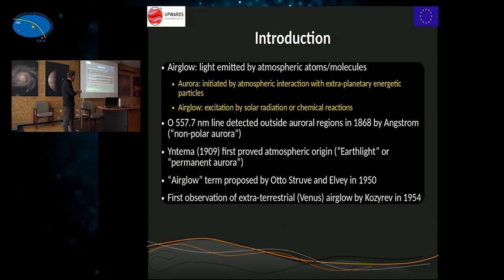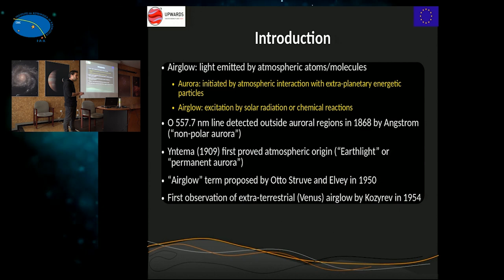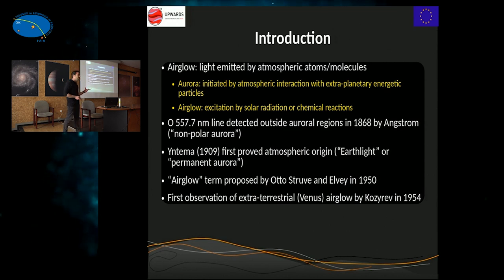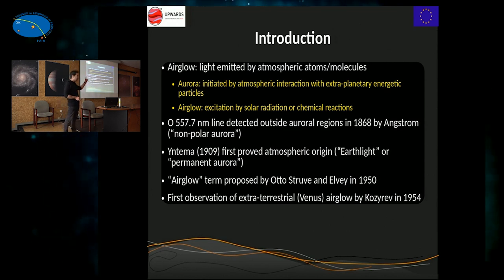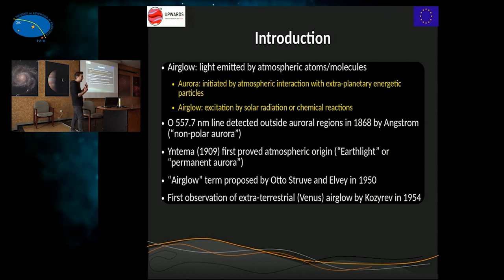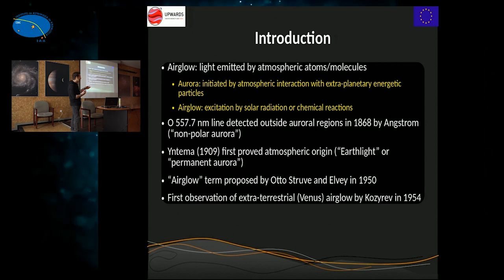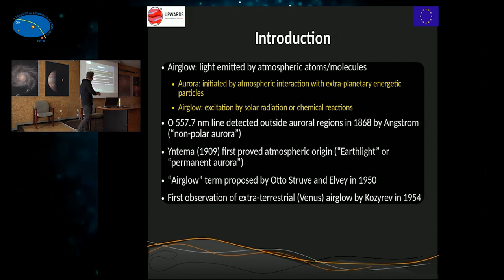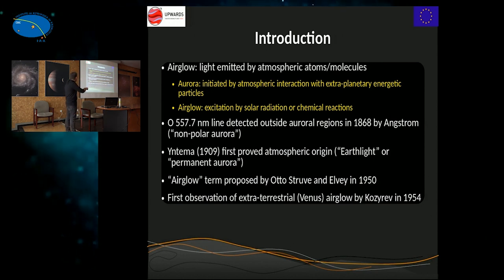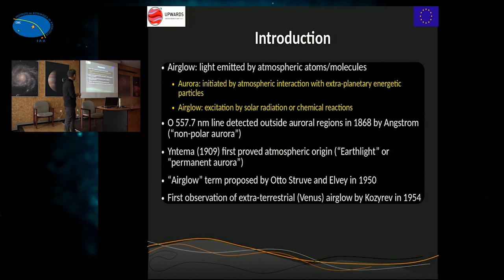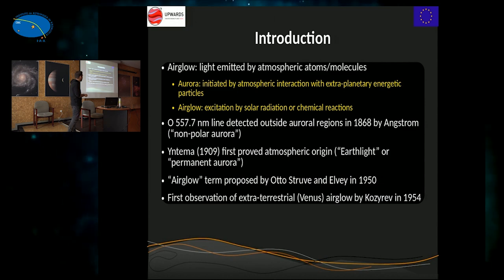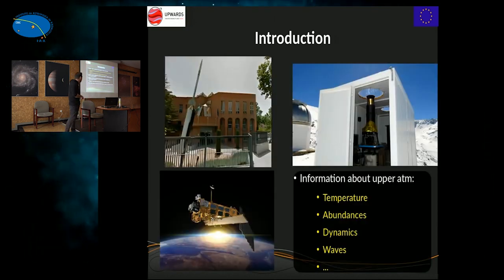It was only in 1909 that Yntema proved that the light came from the atmosphere. He made photometric studies looking at light from different directions, and found that when looking at the horizon, light was more intense than looking at the zenith. That indicates the light comes from the atmosphere itself — you have a larger emitting region at the horizon than at the zenith. He called this 'earth light' or 'permanent aurora.' It was only in the 1950s that the term airglow was widely used, and it was also in the 1950s that the first observation of airglow on another planet — in this case Venus — was made.